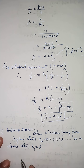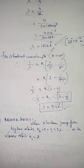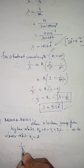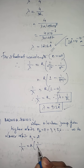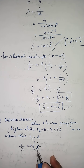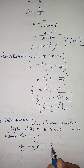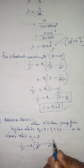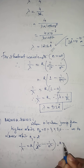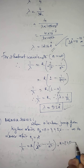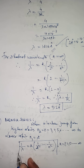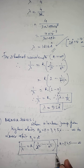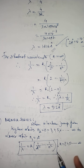For Balmer series, we write the relation as: 1/λ = R(1/2² − 1/N²), where N starts from 3, 4, 5, and so on. This formula measures the wavelength of emitted radiation of the hydrogen atom specifically for Balmer series.